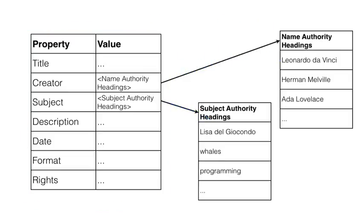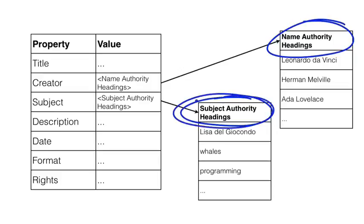This particular relational database that we're looking at here, or data model for a relational database, really, establishes the set of relationships between a single entity, the Mona Lisa, for example, and a set of other entities. So in this case, the secondary tables are authority lists. These are the name authorities and subject authorities from the Library of Congress. The subject authorities are the Library of Congress subject headings, which of course we've looked at before.